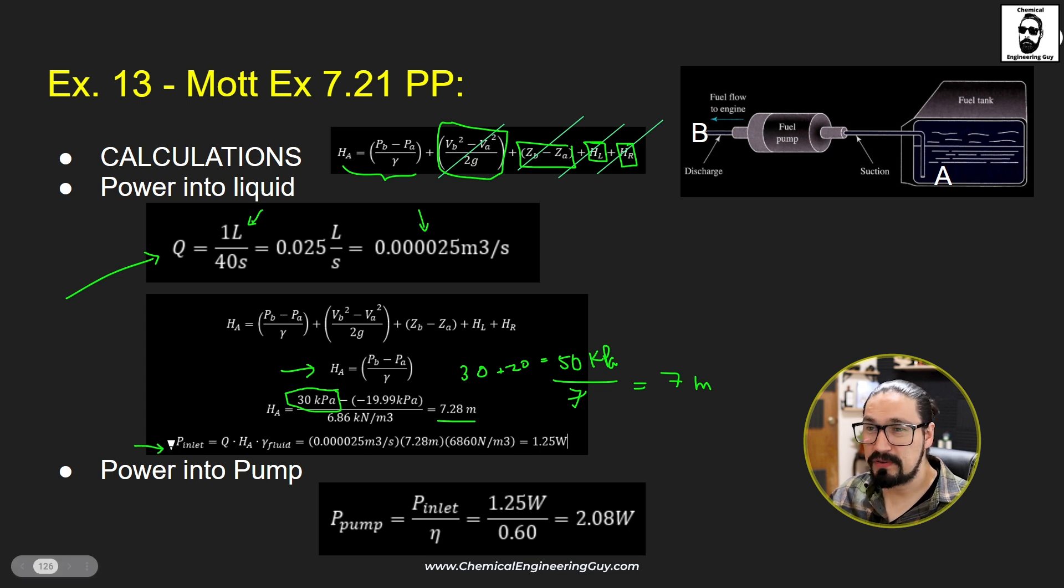Now, the power requirements for the system will be simply volumetric flow rate times head times specific weight of the material. So, this will be the volumetric flow rate, the head of the system, and I'm not using kilonewtons. I'm actually going to be using newtons because I am already seeing that this is a very small amount of power. And we end up with 1.25 watts. But remember that we have 60% of efficiency, so we need to account for that. And in reality, we require a pump of 2.08 watts.